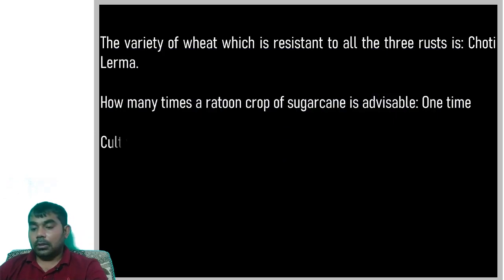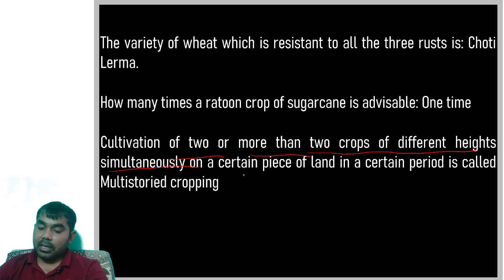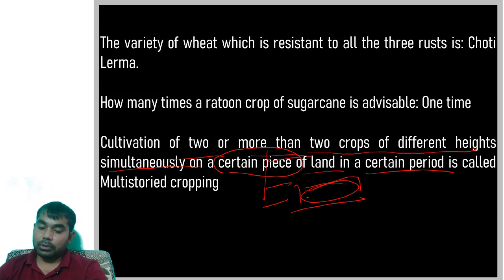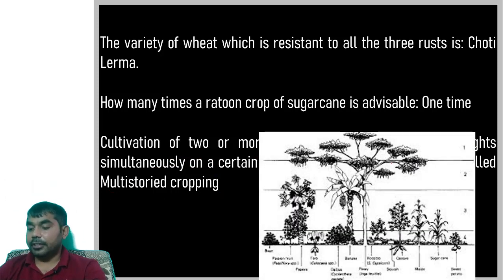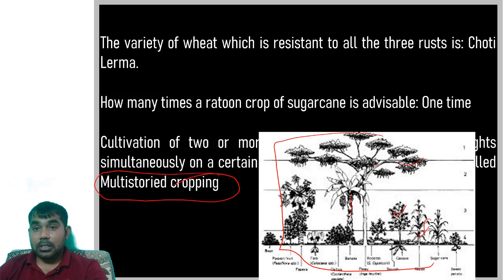The cultivation of two or more crops of different heights simultaneously on a certain piece of land in a certain period is called multi-story cropping. For example, maize, banana, and trees of different heights grown together. This results in intensification both in space and time, making it a very remunerative practice.